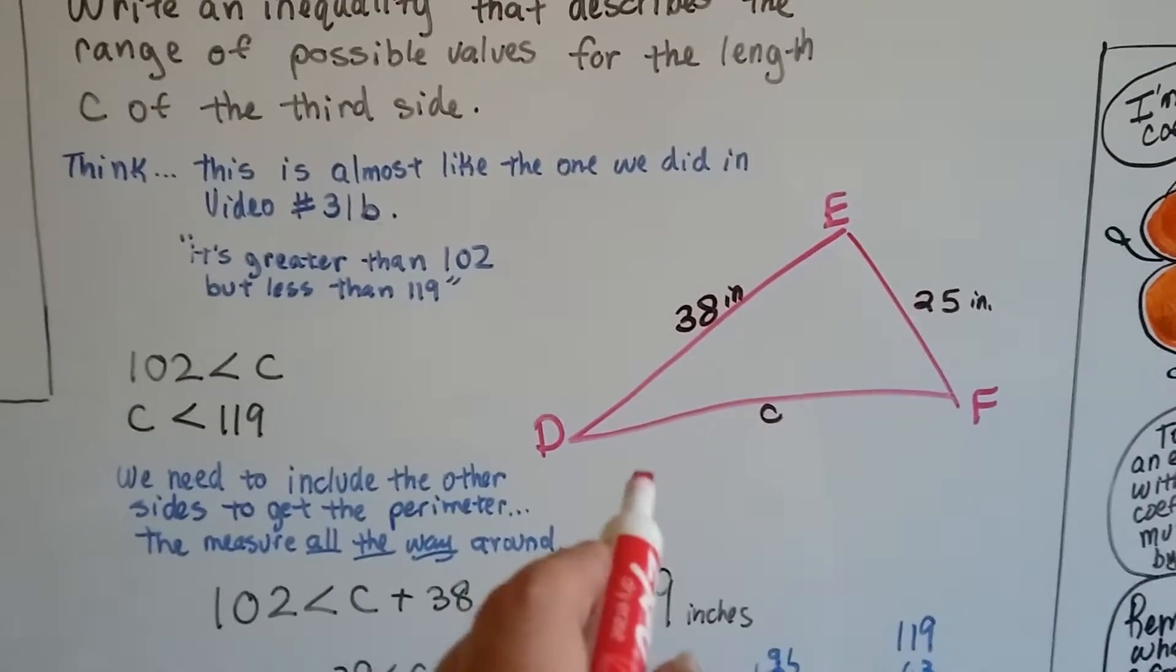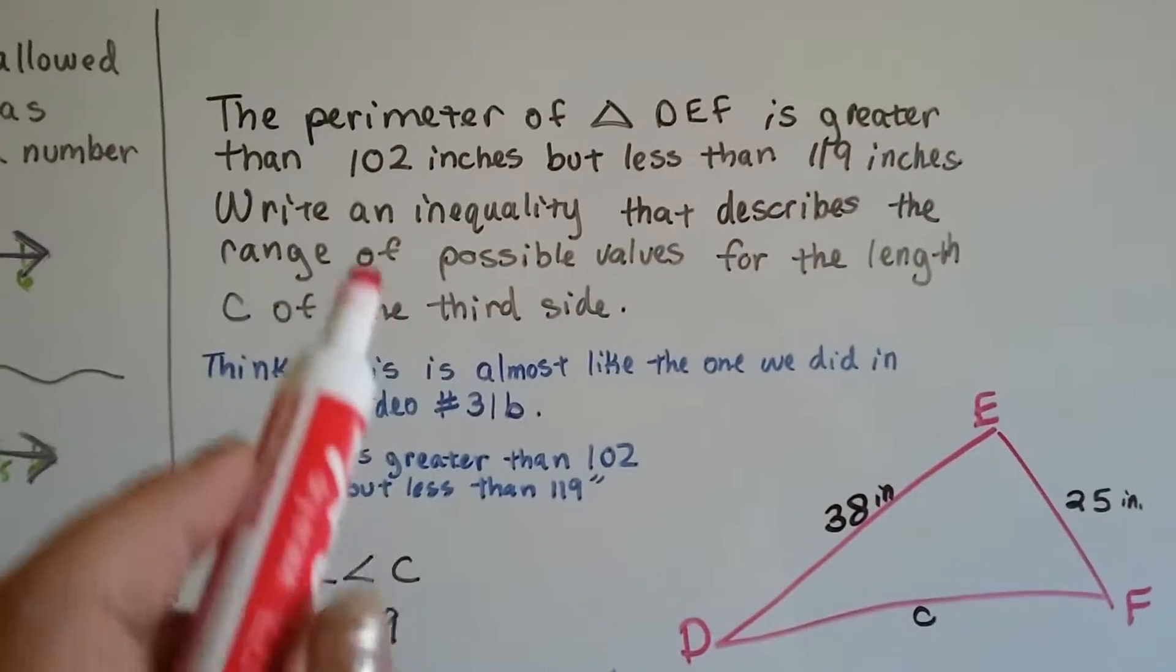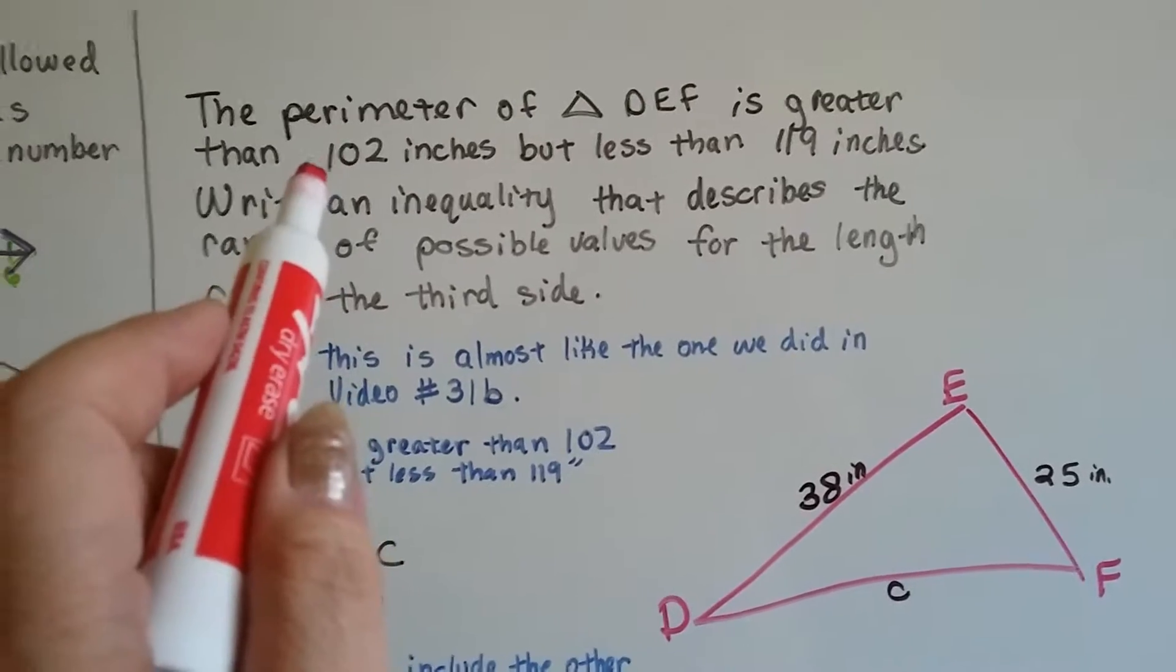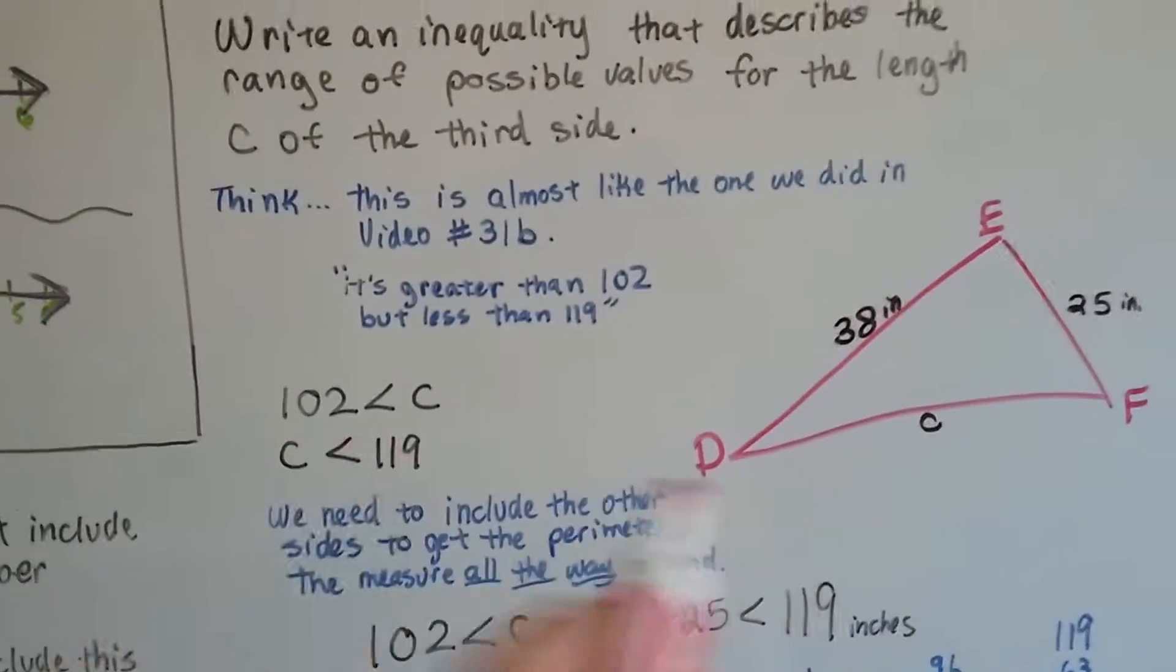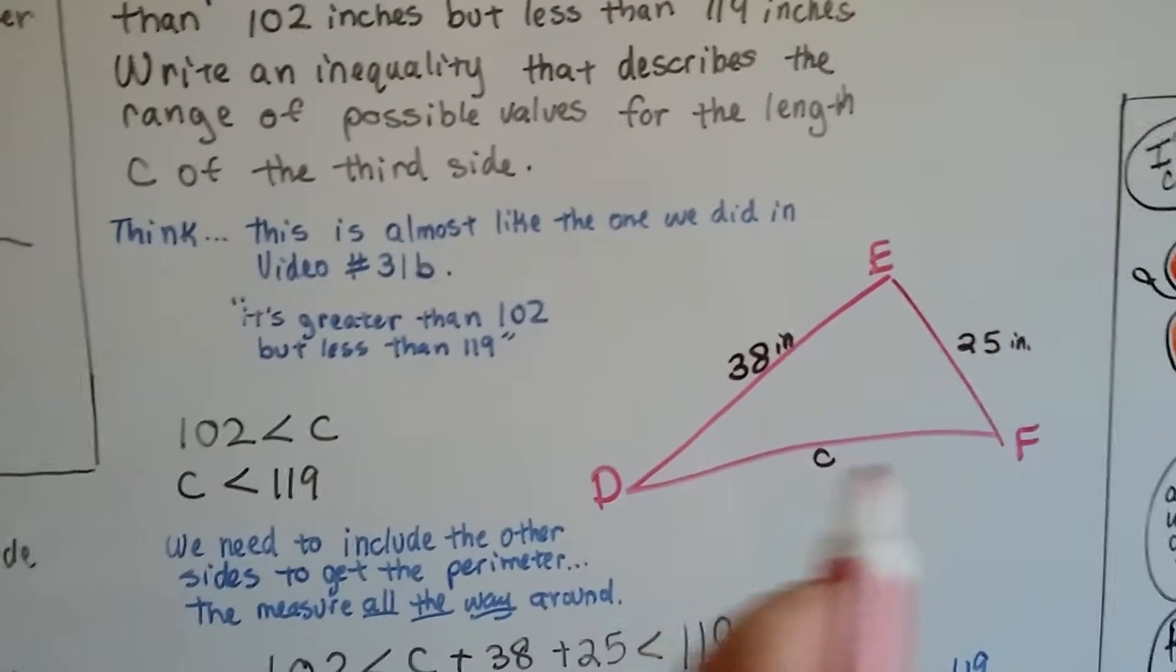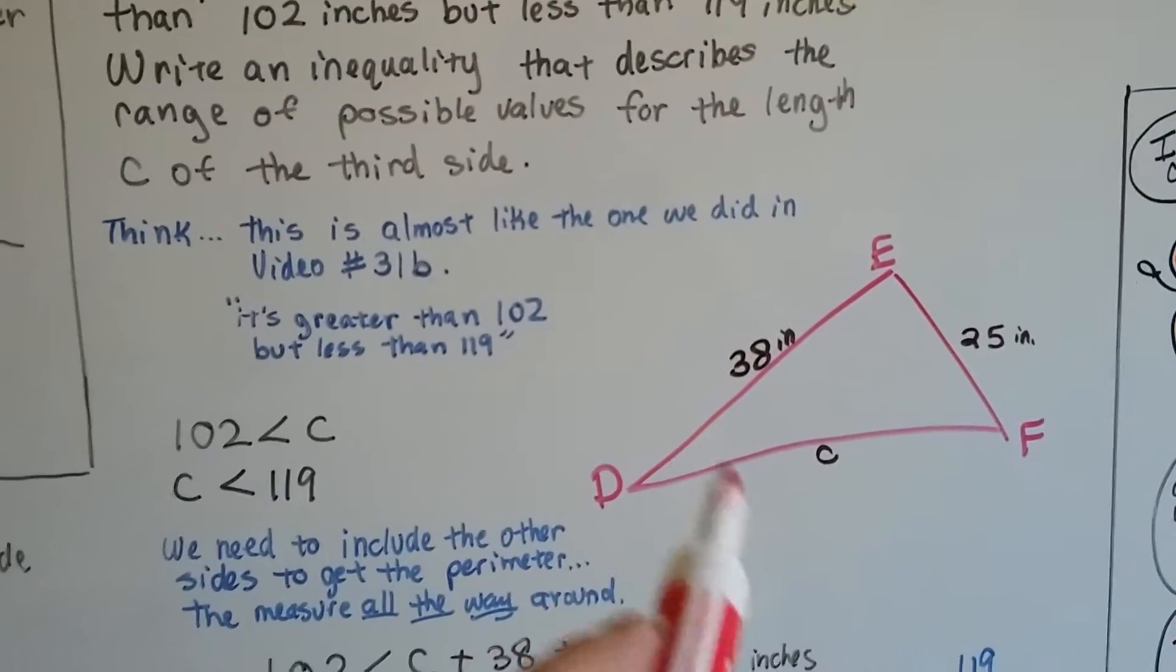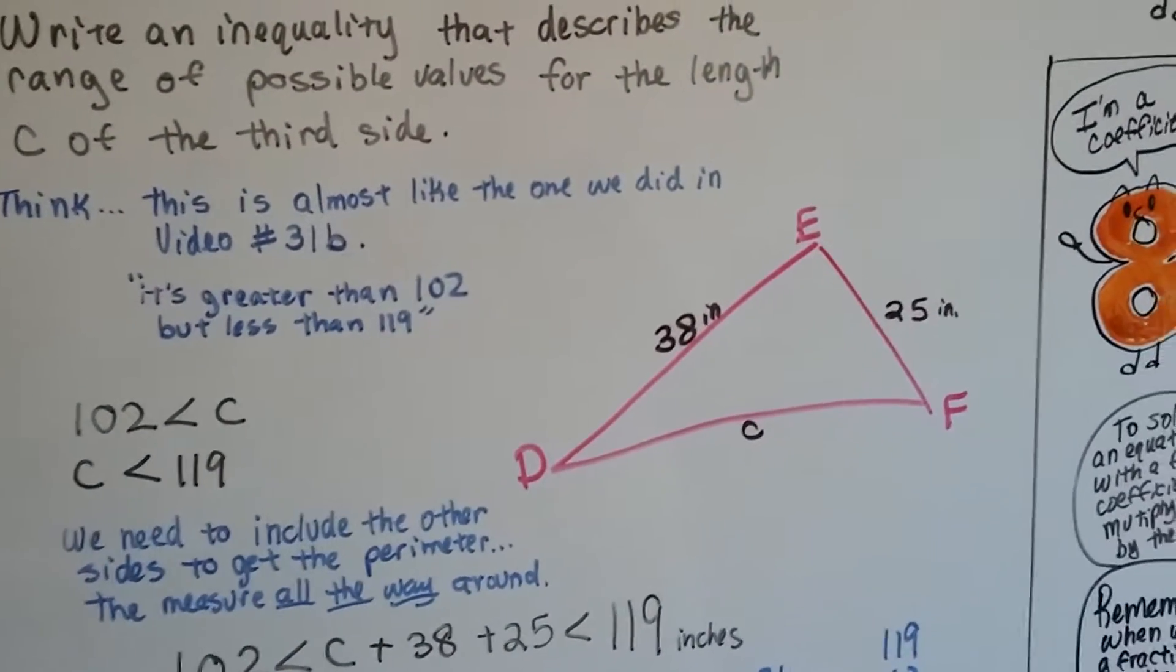And this side is 38 inches, and this side is 25 inches. But, the perimeter going all the way around is bigger than 102, but smaller than 119. So, we know that we need to figure out what this side is, knowing that it's bigger than 102, and smaller than 119.